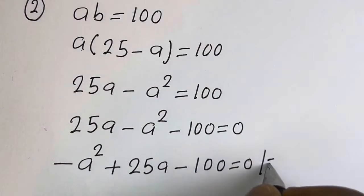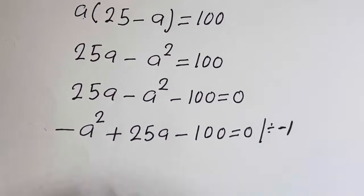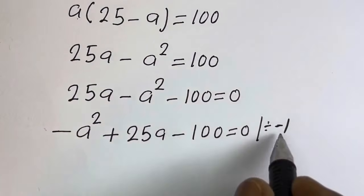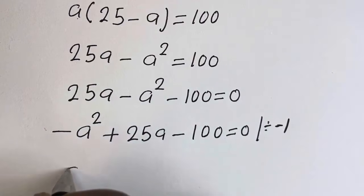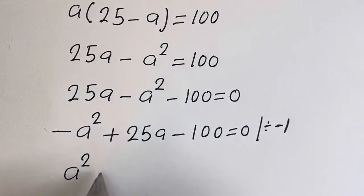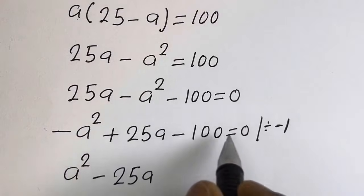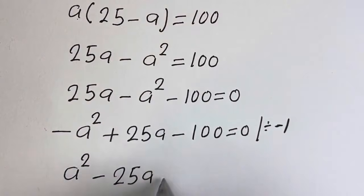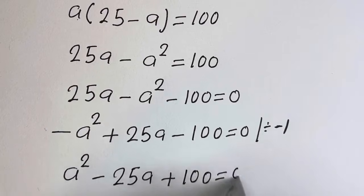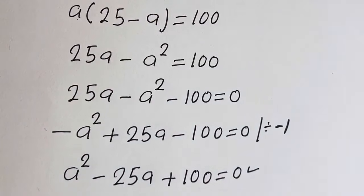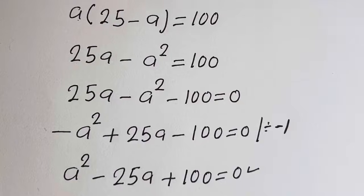Let's divide all through by minus 1. Minus A squared divided by minus 1 gives A squared, plus 25A divided by minus 1 gives minus 25A, minus 100 divided by minus 1 gives plus 100, is equal to 0. So this is a quadratic equation — let's solve this using the quadratic general formula.